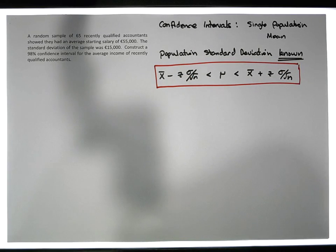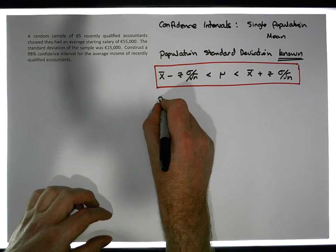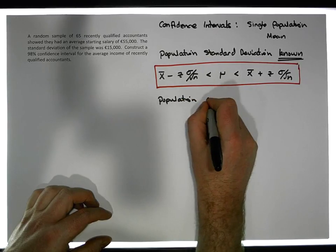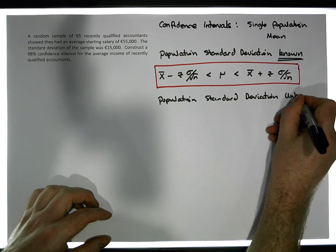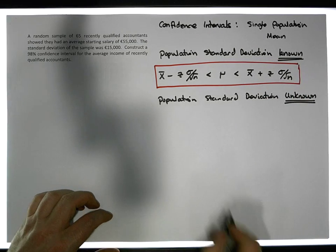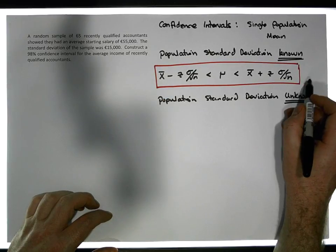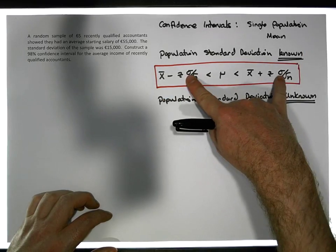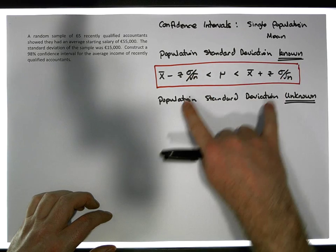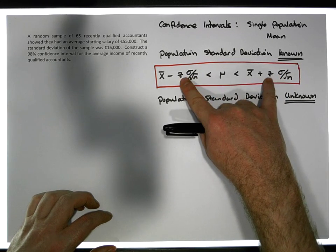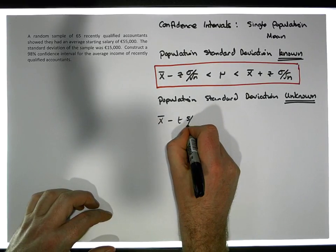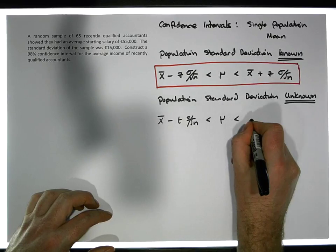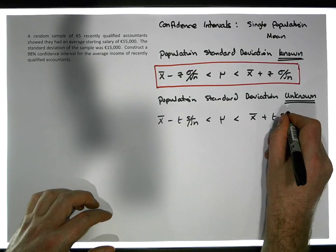When we don't know the population standard deviation and we're given information about the sample standard deviation, we have a different formula — used when the population standard deviation is unknown. Since we don't know sigma but we do know the sample standard deviation s, sigma becomes s. And because we're basing it off sample data, we rely upon a t-distribution. The formula is: x-bar minus t times s over the square root of n must be less than mu, which must be less than x-bar plus t times s over the square root of n.